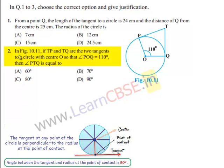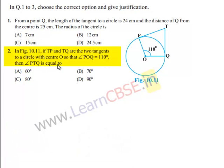Moving on to the second question: in figure 10.11, if TP and TQ are two tangents to a circle with center O such that angle POQ = 110 degrees, find angle PTQ. Let angle PTQ = x.